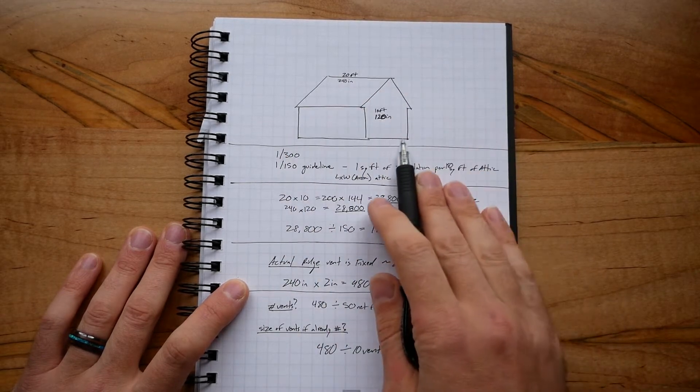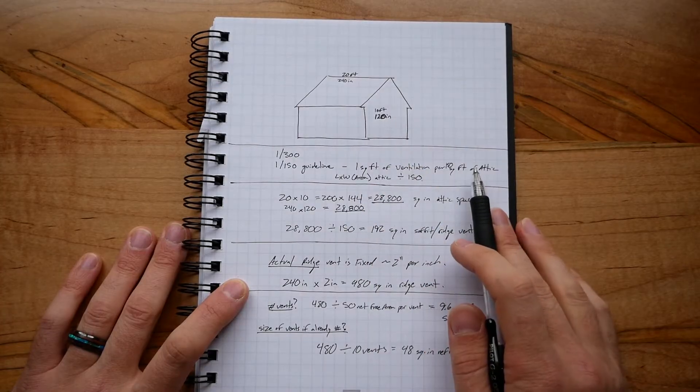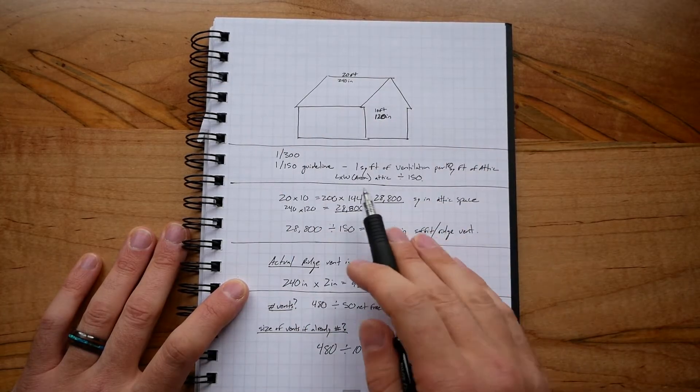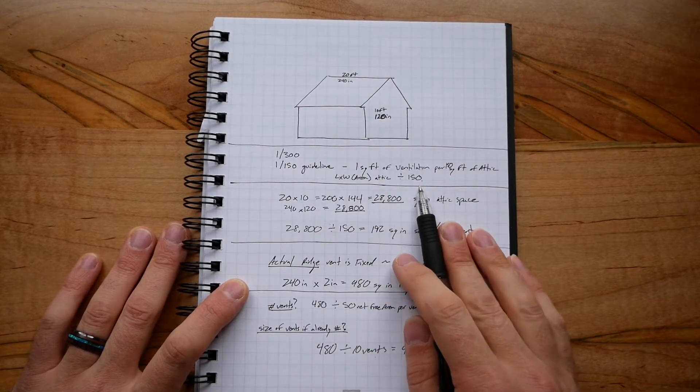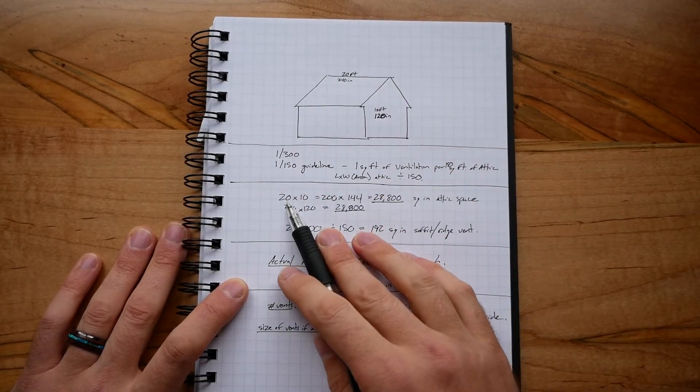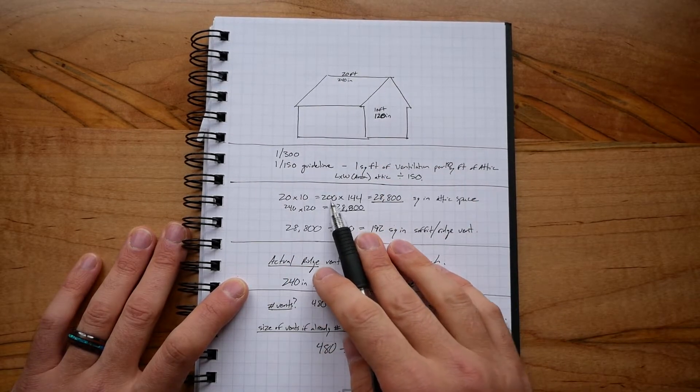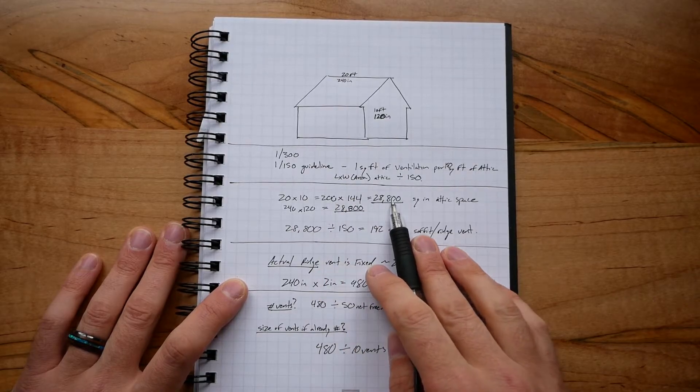In this example, I've got a 20 foot by 10 foot attic space. You would multiply that length and width to get your area of the attic, and then you divide that by 150. So in this case, you do 20 feet by 10 feet for 200 square feet, and then I multiplied that by 144 to get the square inches.